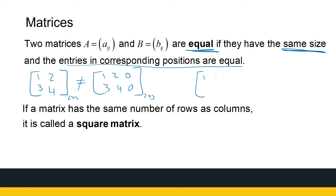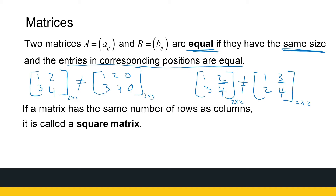Secondly, even if two matrices have the same size and the same numbers present, the entries in the corresponding positions have to be equal. For example, if row one, column two is not the same value in both matrices, you don't have to look further — they cannot be equal. So even though the sizes are the same, if they do not have the same entries in the same positions, they cannot be equal.